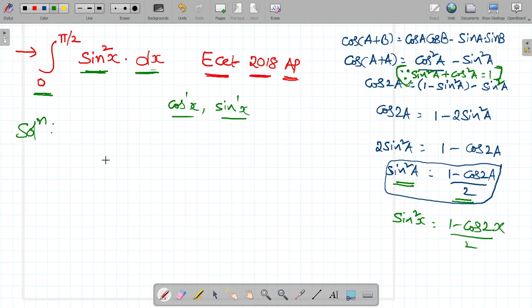Substitute in our problem. Therefore, integral 0 to pi by 2, 1 minus cos 2x by 2 dx. So, 1 minus cos 2x.